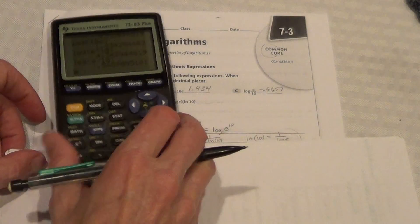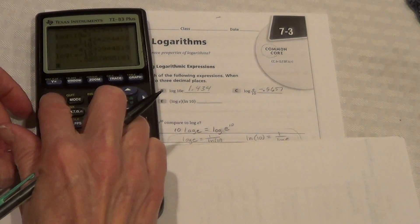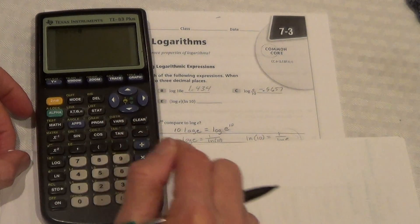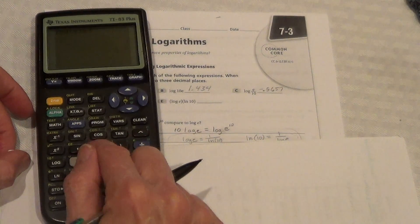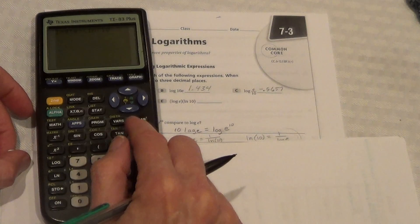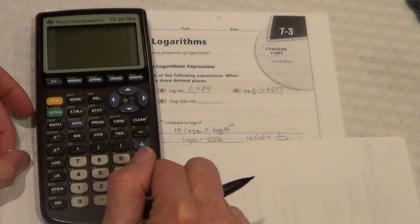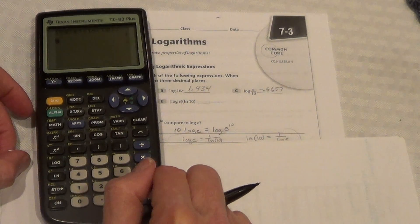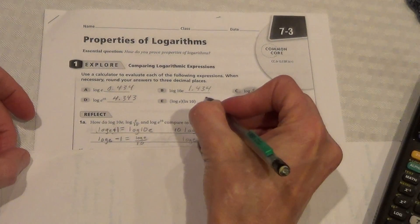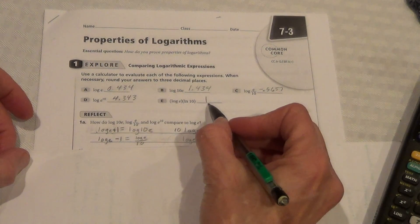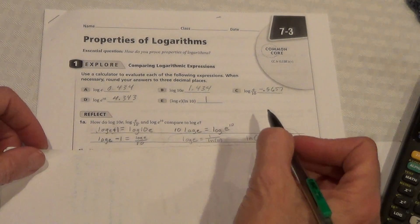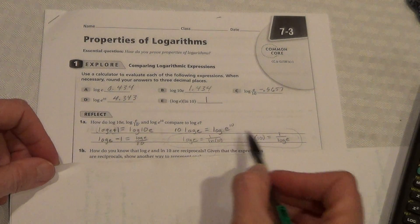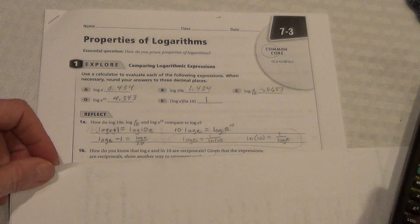Last thing here. Log e times ln 10 equals 1. Any time you have two numbers that multiply and they equal 1, they have to be reciprocals of each other. So, we now know that log e equals 1 over ln 10, or ln 10 equals 1 over log e.